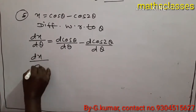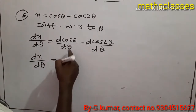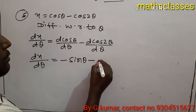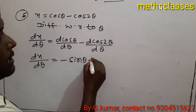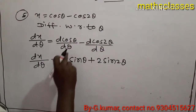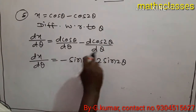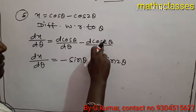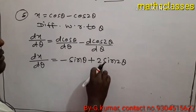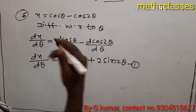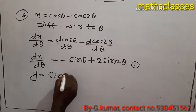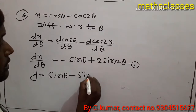So dx upon d theta equal to minus sin theta, and for minus cos 2 theta, the derivative with respect to theta gives minus(minus sin 2 theta times 2), so plus 2 sin 2 theta. Therefore dx upon d theta equal to minus sin theta plus 2 sin 2 theta. This is the first part.